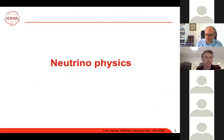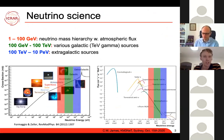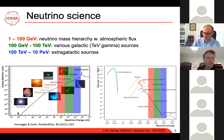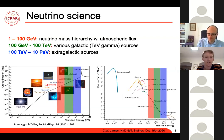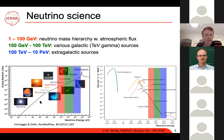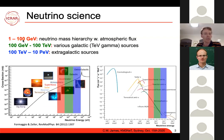There's a lot of neutrino physics and a lot of it depends on the energy scale. You can begin with relic neutrinos from the big bang at a tiny fraction of an electron volt, right up to perhaps cosmogenic neutrinos from ultra-high-energy cosmic ray interactions with the CMB. You also get solar neutrinos in the MeV range and low-energy terrestrial neutrinos from radioactive decays. The regimes I'll be talking about cover essentially three energy ranges: roughly 1–100 GeV for atmospheric neutrino oscillations and mass hierarchy studies.